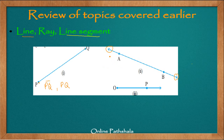A ray is nothing but a line which has one endpoint. In this case we have ray OP, and we represent a ray as OP followed by a single arrow. To represent line AB, we write AB with arrows on both sides, showing the line extends indefinitely in both directions. We also use letters L, M, N to represent a line — so we can say this is line L, line M, or line N. This is simpler than writing the full notation every time.